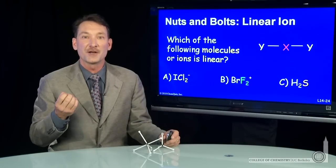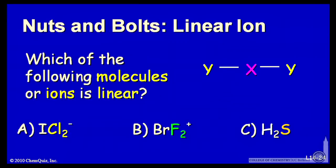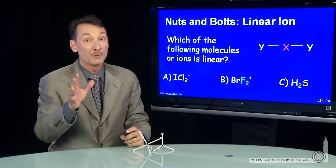Let's look at a couple molecules and see if we can find which one is linear. Here I have ICl2 minus, BrF2 plus, and H2S. All of them have three substituents, so they all have the potential to be linear. But don't be fooled.